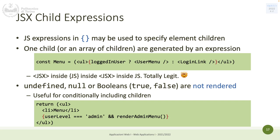If you want to show one component or another, you can use the ternary operator: `loggedIn ? <UserMenu/> : <LoginLink/>`. This is just a different way to do the same thing when you have an alternative to show.